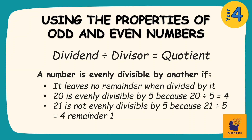21, however, is not evenly divisible by 5 because 21 divided by 5 gives us an answer with a remainder — in this case, 4 remainder 1. I will be using these words throughout today's video.